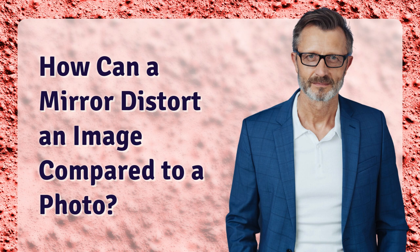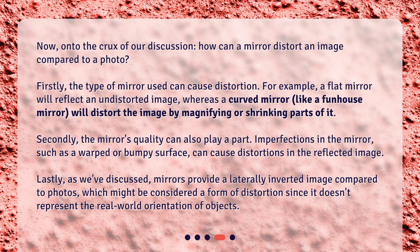How can a mirror distort an image compared to a photo? Now, onto the crux of our discussion. Firstly, the type of mirror used can cause distortion. For example, a flat mirror will reflect an undistorted image, whereas a curved mirror, like a funhouse mirror, will distort the image by magnifying or shrinking parts of it. Secondly, the mirror's quality can also play a part — imperfections in the mirror, such as a warped or bumpy surface, can cause distortions in the reflected image. Lastly, mirrors provide a laterally inverted image compared to photos, which might be considered a form of distortion since it doesn't represent the real-world orientation of objects.